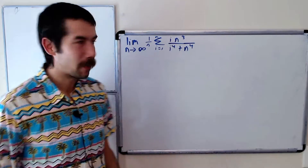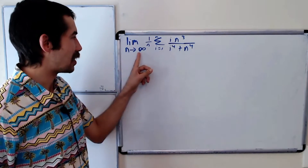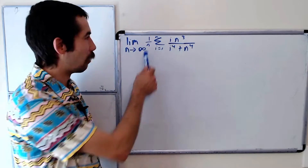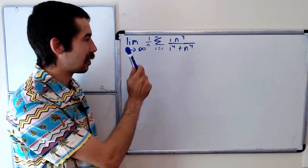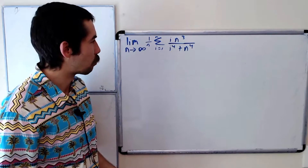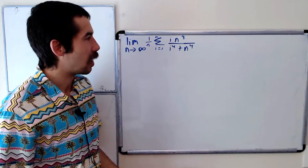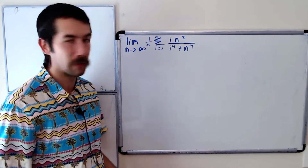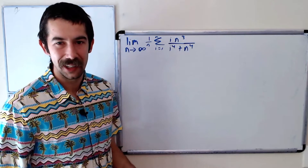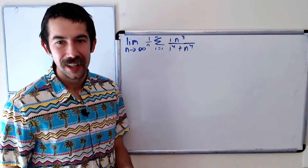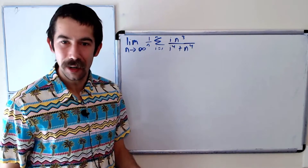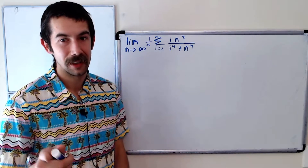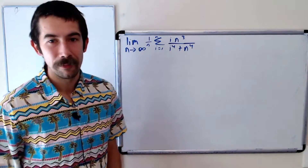Today we're going to evaluate the limit as n goes to infinity of 1 over n, the sum from i equals 1 to n of i·n³ over i⁴ plus n⁴. Try it on your own and think Riemann sums.